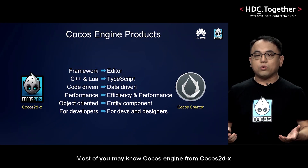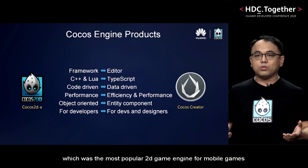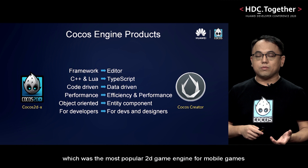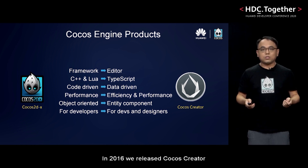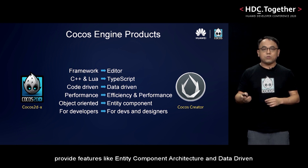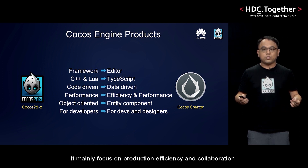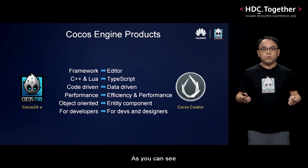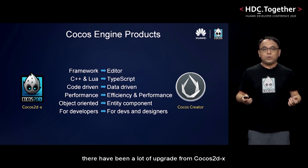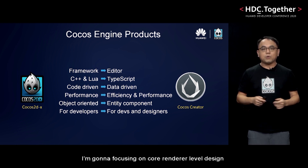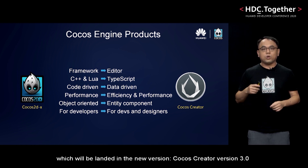Most of you may know COCOS engine from COCOS 2DX, which was the most popular 2D game engine for mobile games. In 2016, we released COCOS Creator, a WYSIWYG game editor that provides features like entity-component architecture and data-driven design. It mainly focuses on production efficiency and collaboration between developers and designers. There have been a lot of upgrades from COCOS 2DX. In today's graphics panel, I'm going to focus on the renderer-level design, which will be landed in the new version, COCOS Creator 3.0.